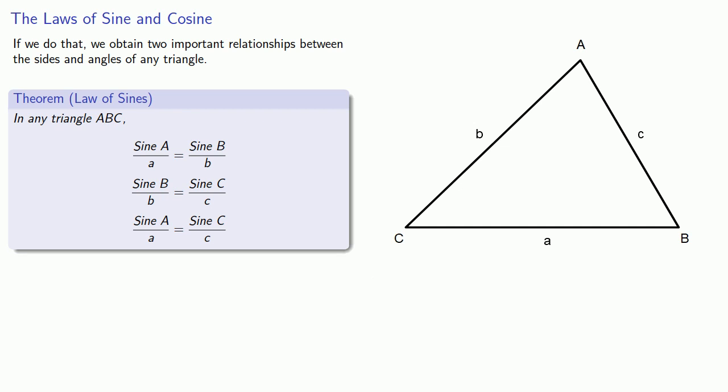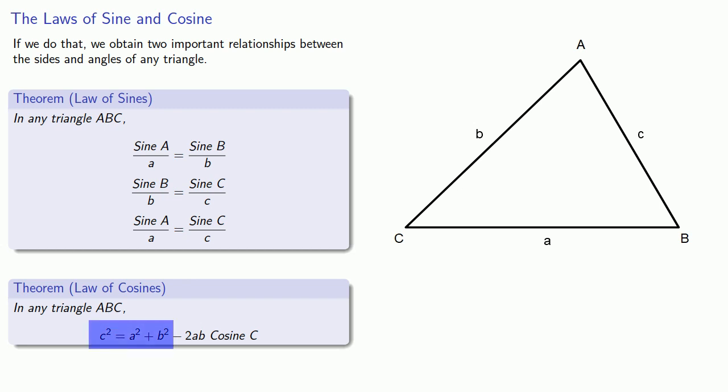The other important relationship is known as the law of cosines. In any triangle ABC, c squared equals a squared plus b squared minus 2ab times the cosine of the measure of the angle C. This is like the Pythagorean theorem with a correction factor.